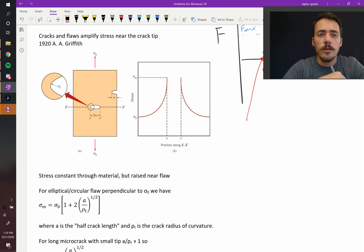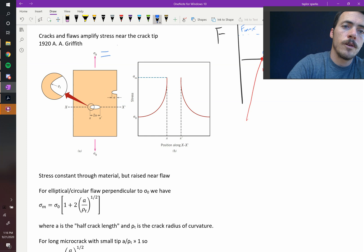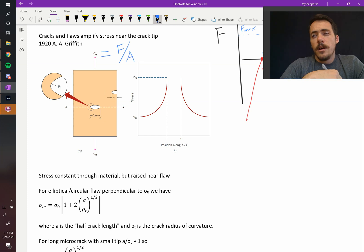In either scenario, you apply some stress to this thing, sigma naught. That's the force divided by area. Stress is equal to force divided by the cross sectional area.